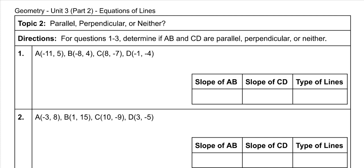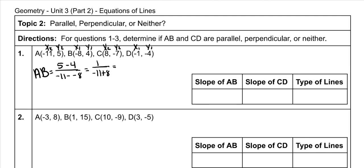We're going to use the slope formula. For the slope of AB, label your coordinates x2, y2, x1, y1. It's y2 minus y1 over x2 minus x1, so 5 minus 4 over negative 11 minus negative 8. That gives us 1 on top. Negative 11 minus a negative becomes plus, so negative 11 plus 8 is negative 3. The slope of AB is negative 1 third.